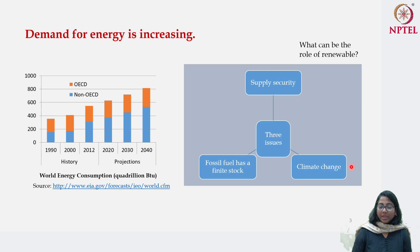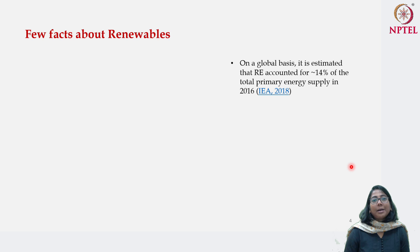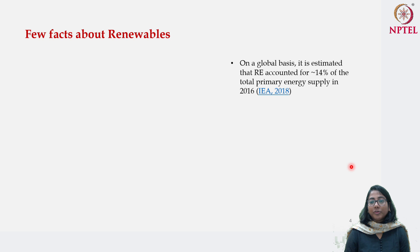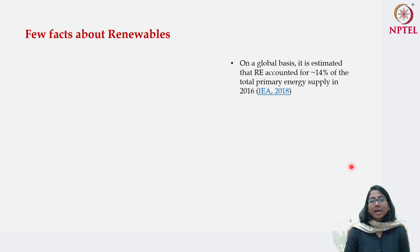A couple of facts about renewables: on a global basis, it was estimated in 2016 that renewable energy contributes approximately 14 percent of total primary energy supply. The concept of total primary energy supply — if you want to revise — I would request you to go back to week one when we discussed the energy balance table. However, one point of note is that that is not the only way total primary energy supply can be measured; there are other ways as well. Renewable accounts for 14 percent of TPES.